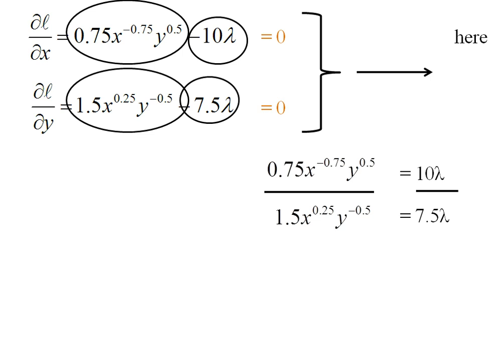The reason I've done this is it's going to make it easier for me to simplify these terms. For one thing, lambda is going to cancel right out, and I'm just left with my x's and y's. I can take that 0.75 and that 1.5, simplify them. That's going to be 0.5 as the coefficient on the left-hand side. I can take that 10 and that 7.5, and it's going to simplify to 1.33.